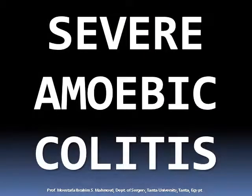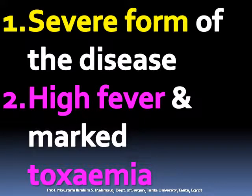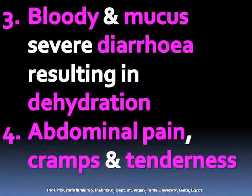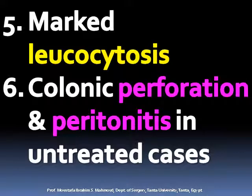Severe amoebic colitis is the severe form of the disease, characterized by high fever and marked toxemia. There is blood and mucus in stool, severe diarrhea resulting in dehydration, abdominal pain, cramps and tenderness, and marked leukocytosis. Untreated cases may develop colonic perforation and peritonitis.